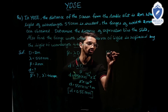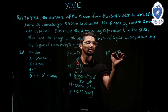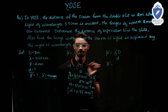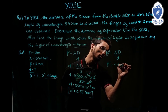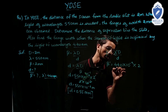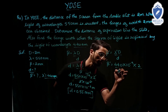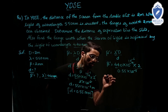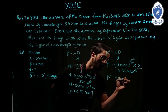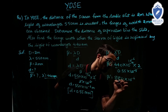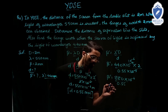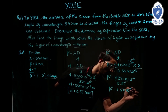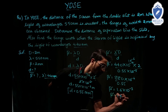Also find beta' when wavelength is replaced by lambda' = 440 nanometer, with D and d unchanged. Beta' equals lambda' D by d equals 440 into 10⁻⁹ into 2 divided by 0.55 into 10⁻³. Cancelling 10⁻⁹ and 10⁻³ gives 10⁻⁶. Then 440 into 2 = 880 divided by 0.55 equals 1600. Therefore beta' equals 1.6 millimeter.